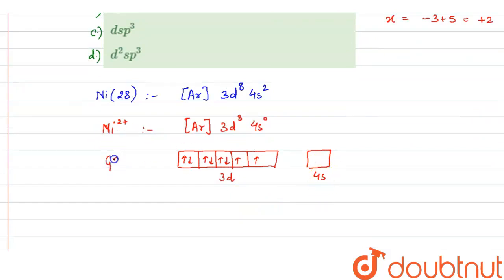When we draw the 3d orbital, it has 8 electrons: 1, 2, 3, 4, 5, 6, 7, 8, and in 4s we have no electron. So this is ground state electronic configuration. Now what happens in excited state when cyanide ligands approach towards nickel ion?